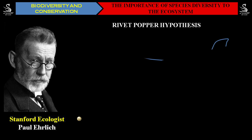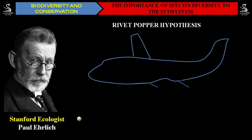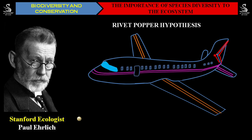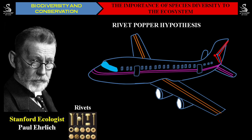What Paul Ehrlich says is: whatever the entire ecosystem is that you are looking at outside from your window or your home, he compared that ecosystem with an airplane. The airplane you see here has windows, wings, and different spare parts. Each and every part of this airplane is fixed with the help of nut bolts — these are nothing but the rivets.